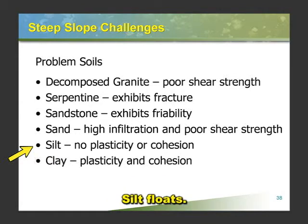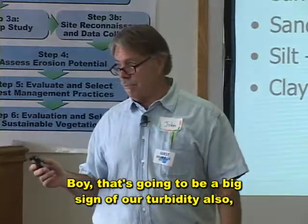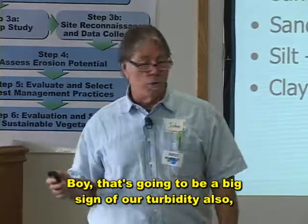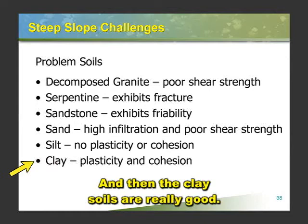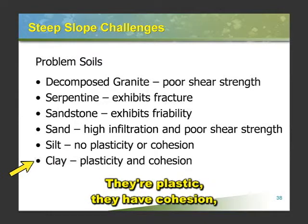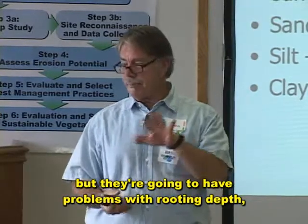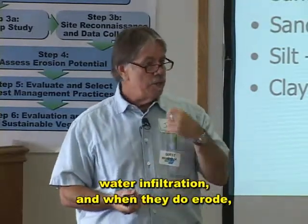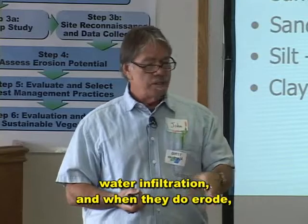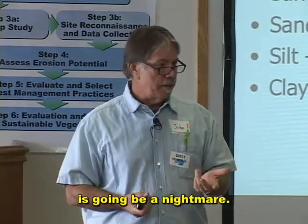Silt floats. That's going to be a big sign of our turbidity also — the silty. And then the clay soils are really good. They're plastic. They have cohesion, but they're going to have problems with rooting depth and water infiltration. And when they do erode, getting that clay out of suspension is going to be a nightmare.